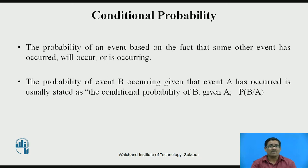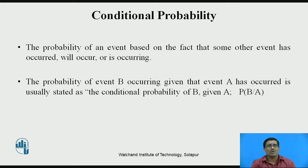The first topic is conditional probability. The probability of an event, based on the fact that some other event has occurred, will occur, or is occurring. The probability of event B occurring, given that event A has occurred, is usually stated as the conditional probability of B given A, that is P(B|A). In short, the conditional probability means the probability of occurrence of B purely depends on the occurrence of A — the probability of occurrence of any event depends on the occurrence of another event.